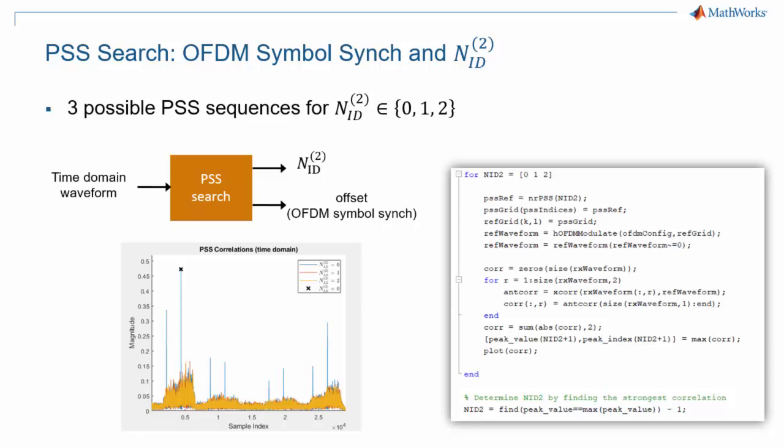As we saw in the episode of this 5G Explained series about the synchronization signal block, there are three possible primary synchronization sequences. The UE typically runs three correlators in parallel to detect one of the three possible sequences. Once a peak is detected, two pieces of information have been gained: which PSS is being transmitted, and the timing of the SSB.